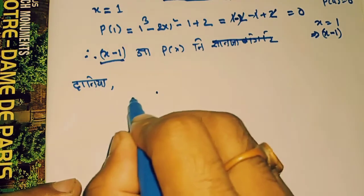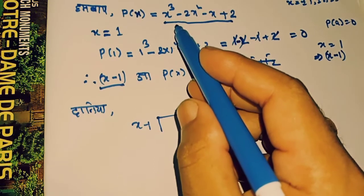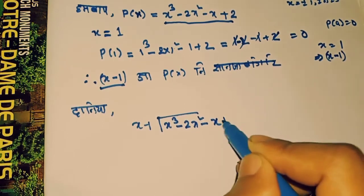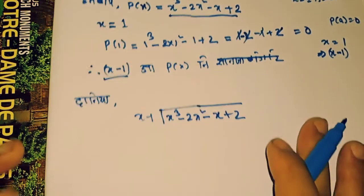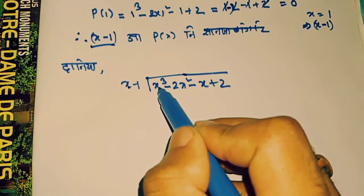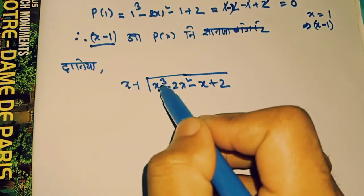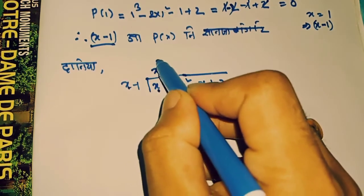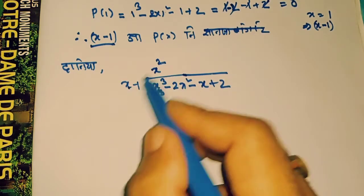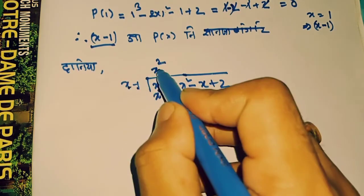Let's take a look at x minus 1 dividing x cubed minus 2x squared minus x plus 2. Next, we have the exact same thing. Since x is compared with x, x is x squared, then x cubed. We have x cubed.